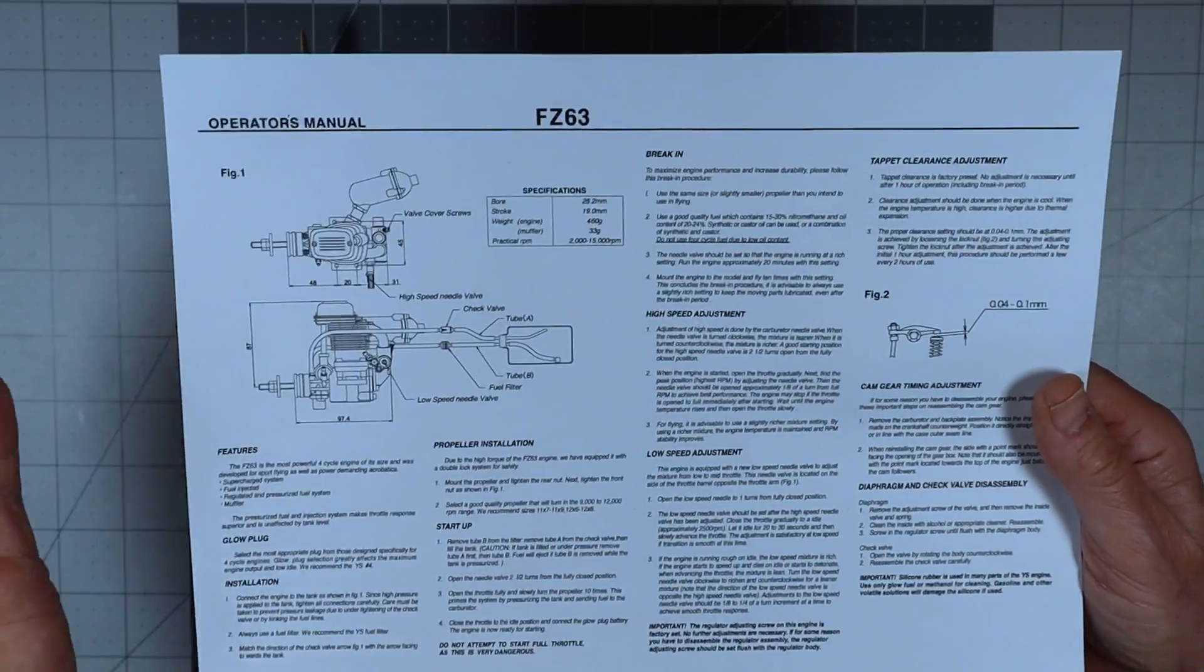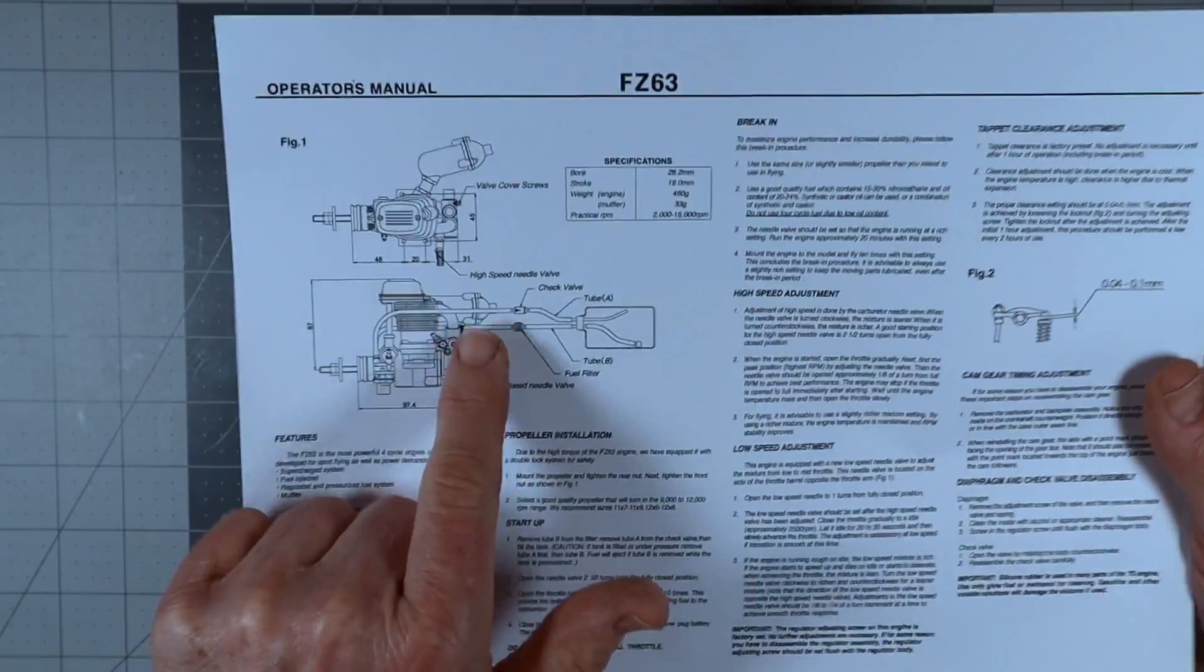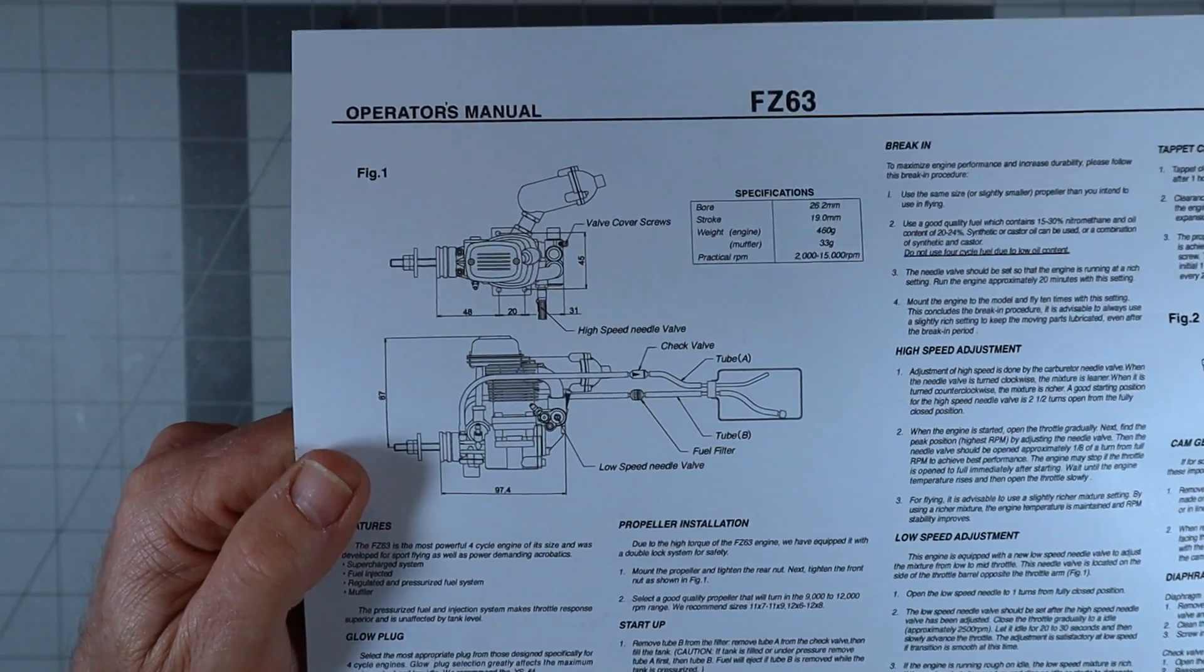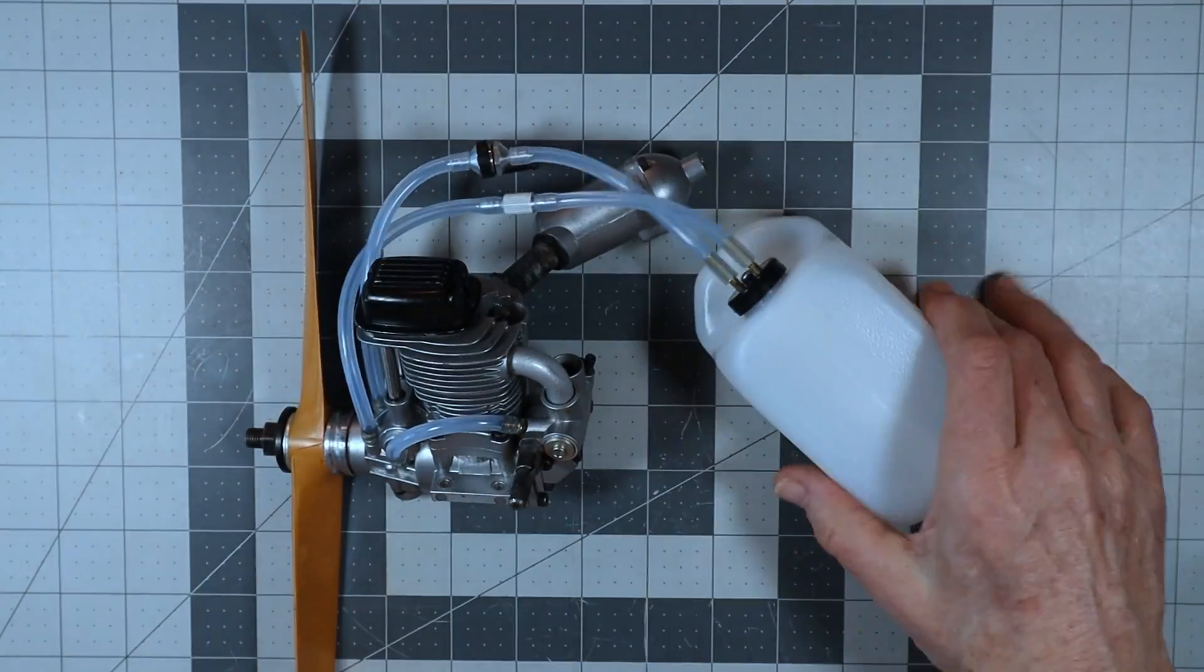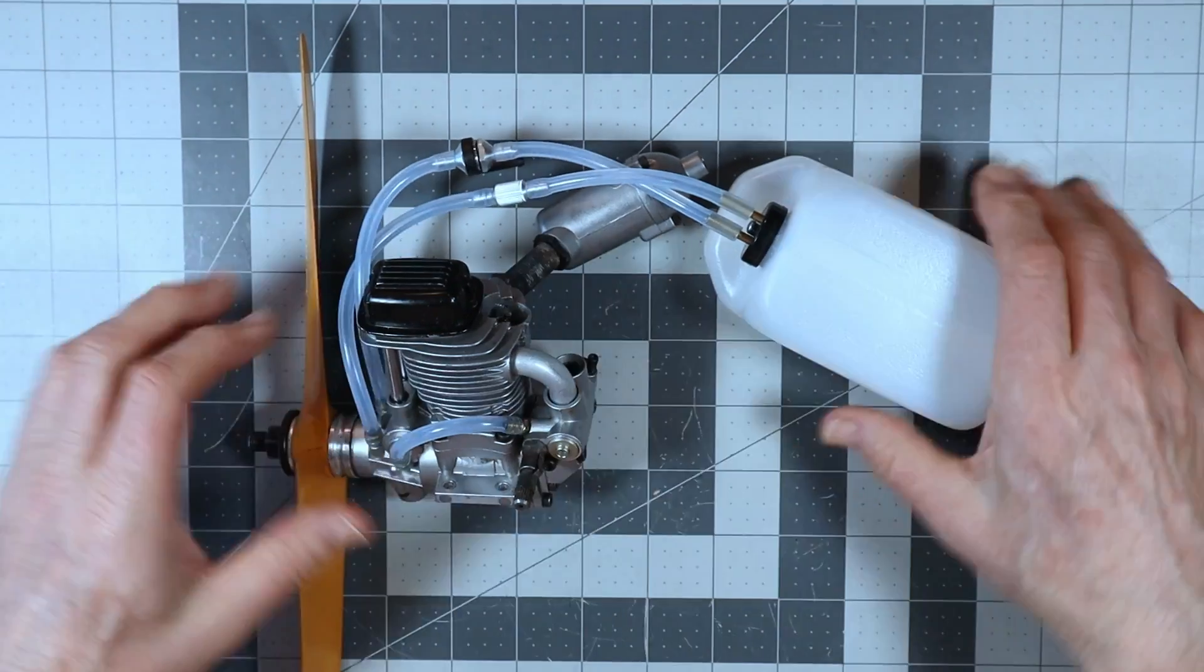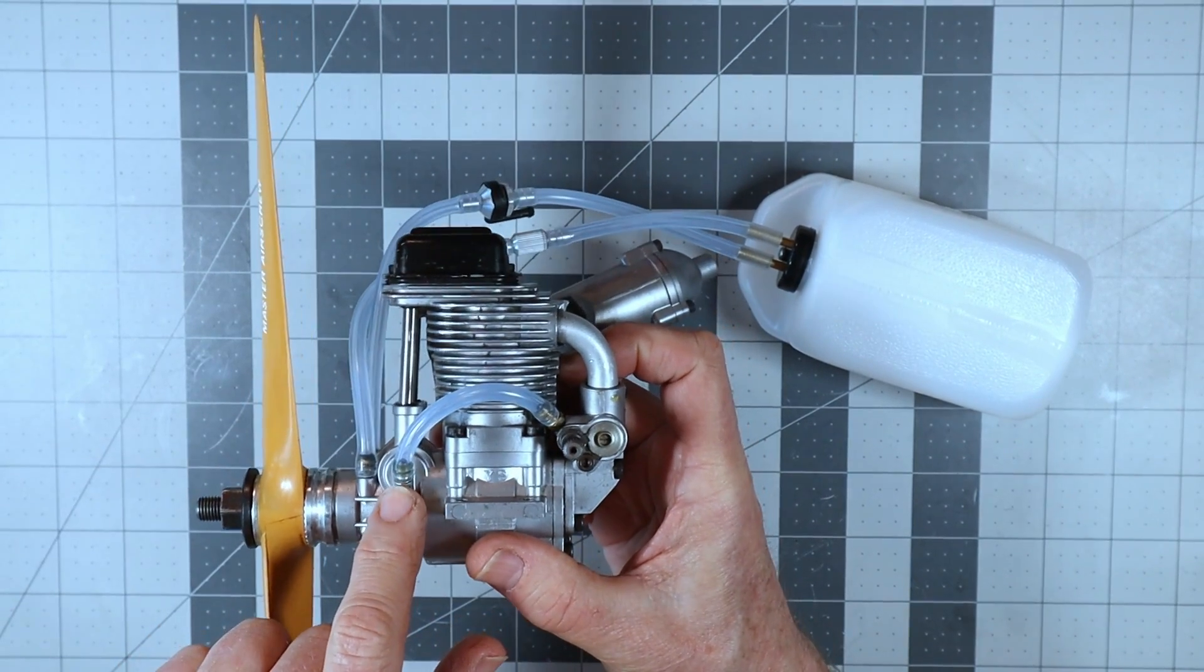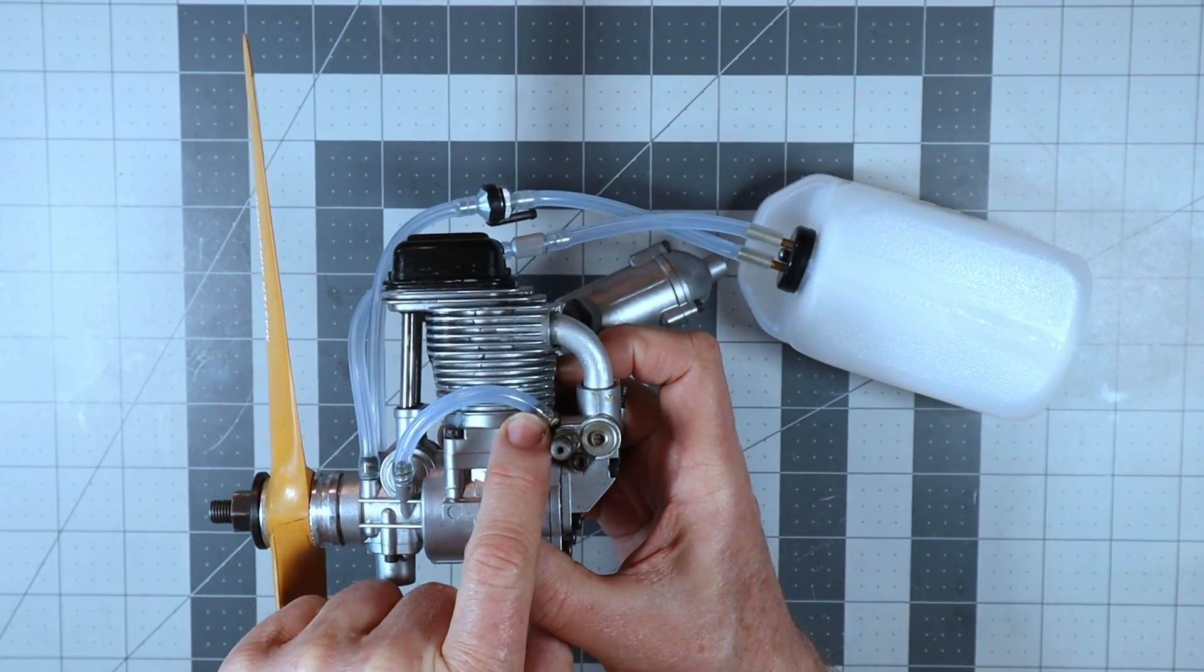So this manual is awesome. It tells you everything you need to know. And it also shows how you plumb the system. So I've plumbed my system exactly the way they have it here, which is from the output of the regulator goes to the needle valve, the high speed needle valve or the carb.